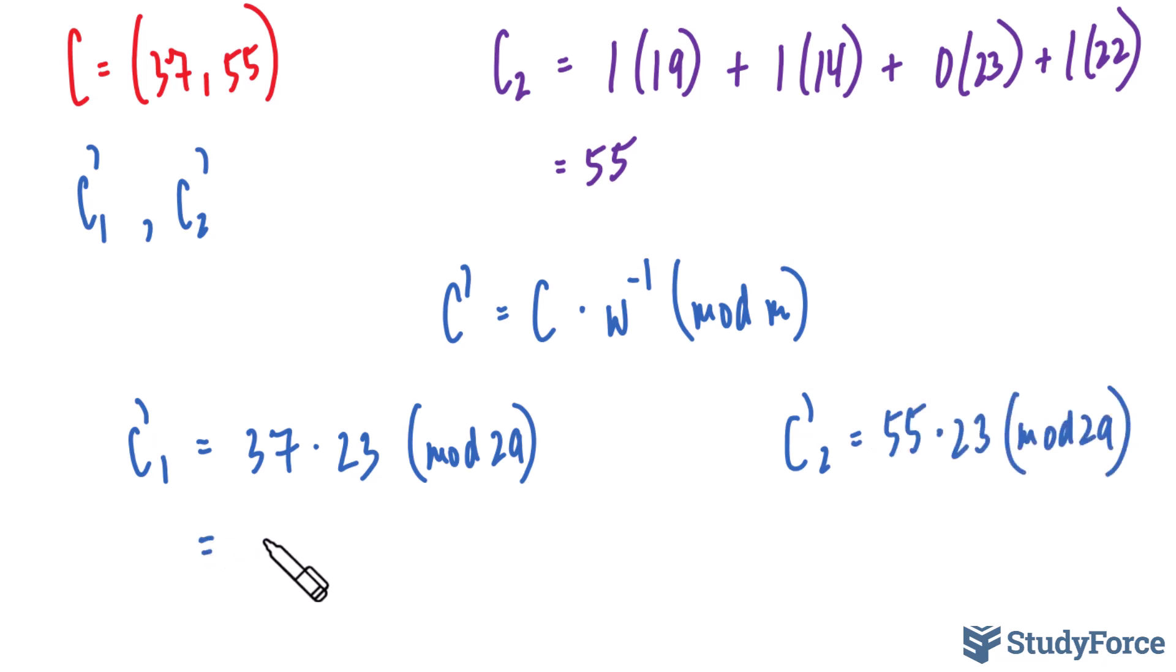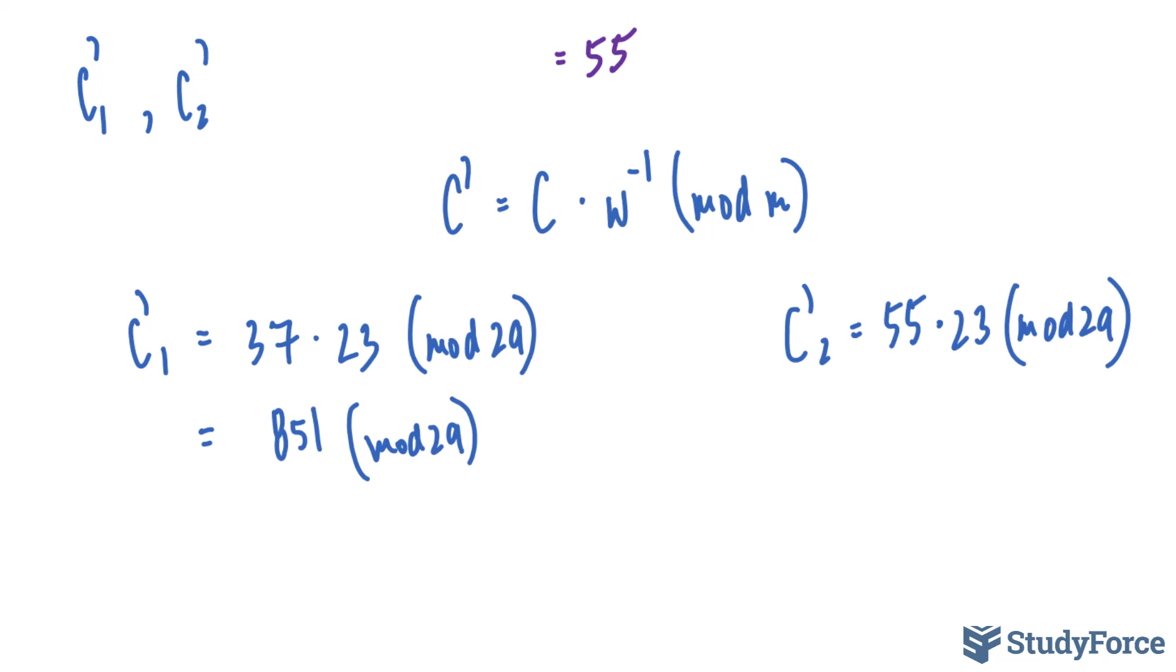37 times 23 makes 851, mod 29. Remember that 851 mod 29 is like saying, what is the remainder of 851 divided by 29? And the remainder, if you do it through a long division, will be 10. So we have a remainder of 10. If we do the same thing for the other one, the product of these two is 1265, mod 29, and the remainder of these two happens to be 18. These two numbers tell us that within Alice's super-increasing sequence D, there exists a subset of terms that sum up to 10 and 18.